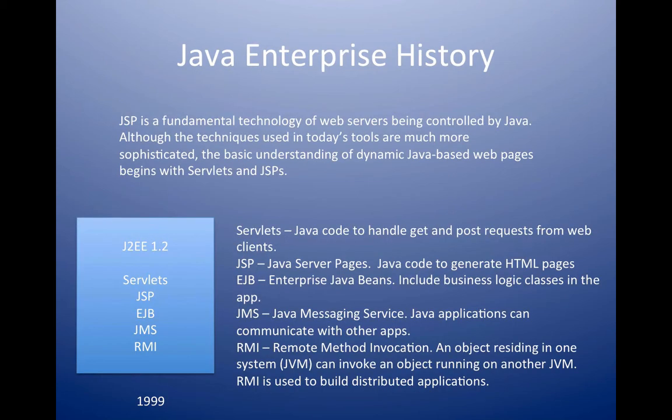The history of Java in enterprise format goes back to 1999, with the version called J2EE. It began with the idea of servlets and JSP, and so we began to create a more enterprise version of Java programming.